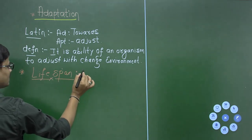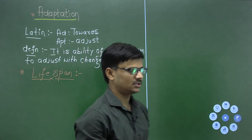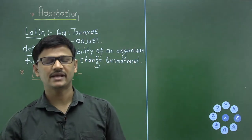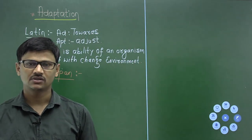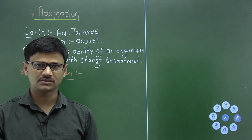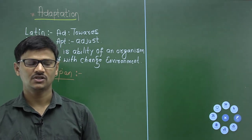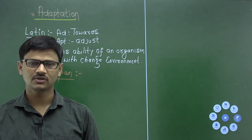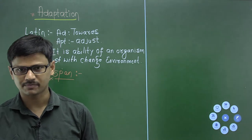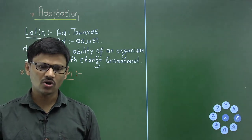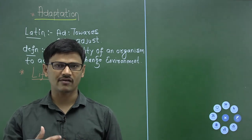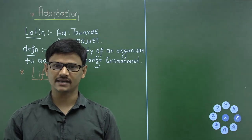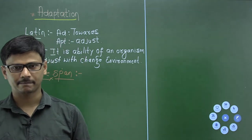We need to discuss another living property called life span. If you take any organism — be it animal, plant, insect, or bird — all these organisms have a birth and a death. In between the birth and the death, the time period or time gap that exists is what is called life span.